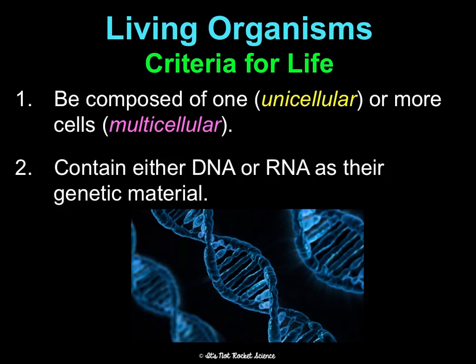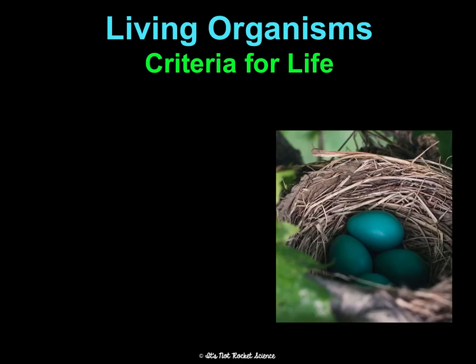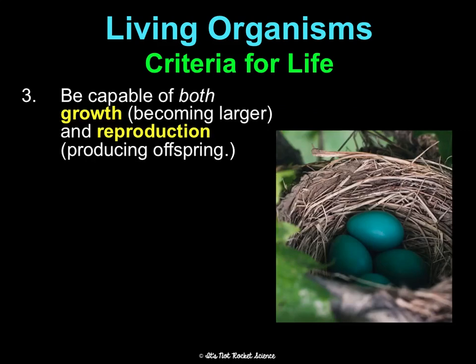Second, you have to have DNA or RNA as your genetic material. Humans have both DNA and RNA, but some organisms — specifically prokaryotes, which don't have a nucleus — may only have one. You have to have nucleic acids as your genetic material.